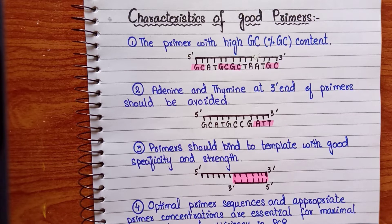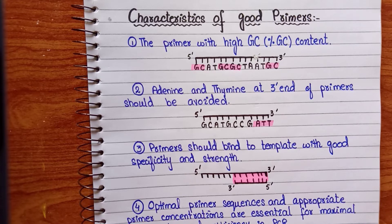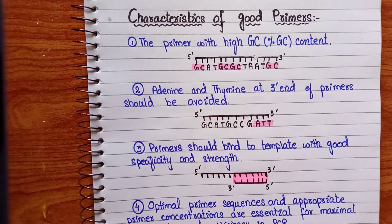Primers are basically single-stranded DNA molecules, almost 20 to 30 bases in length. We have two types of primers: the forward primer, which runs 3' to 5' on the sense strand, and the reverse primer, which runs 5' to 3' on the antisense strand.